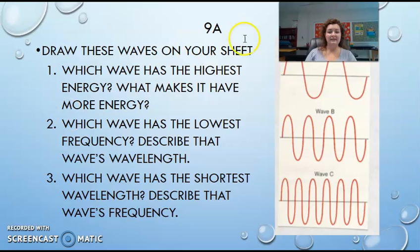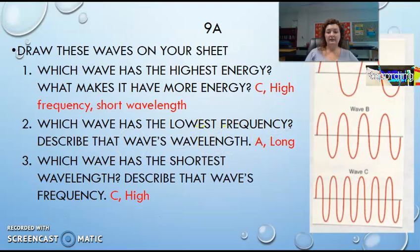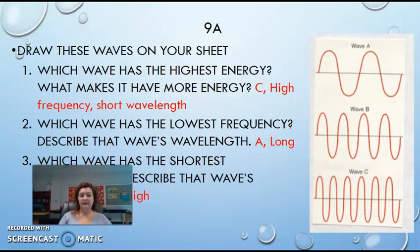So the next one says, make sure that you have these on your paper. Which wave has the highest energy? What makes it have more energy? So it's going to be C. It is C because it has the highest frequency and the shortest wavelength out of all three.